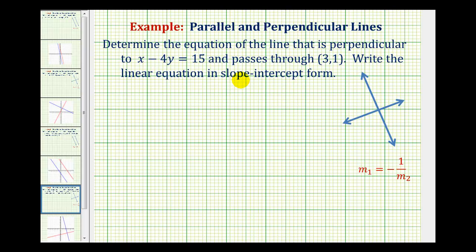So just for a quick review, if two lines are perpendicular, they intersect and form a right angle, or a 90-degree angle, and their slopes are negative reciprocals of one another, which can be written using this notation here.